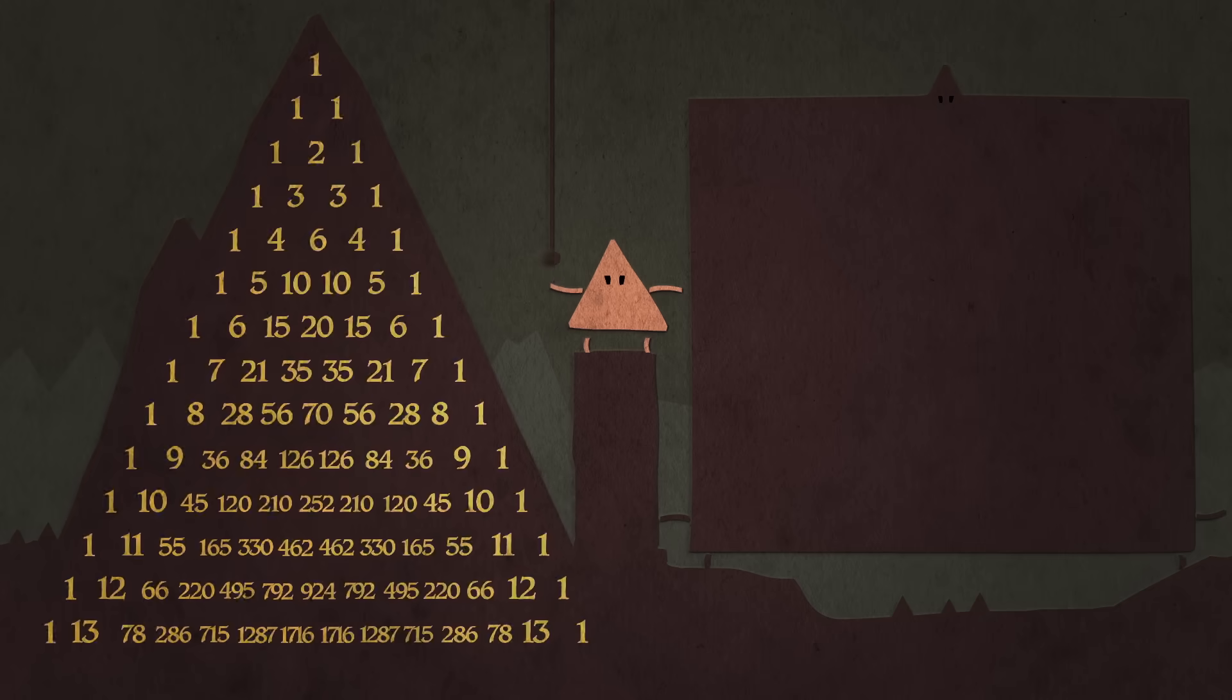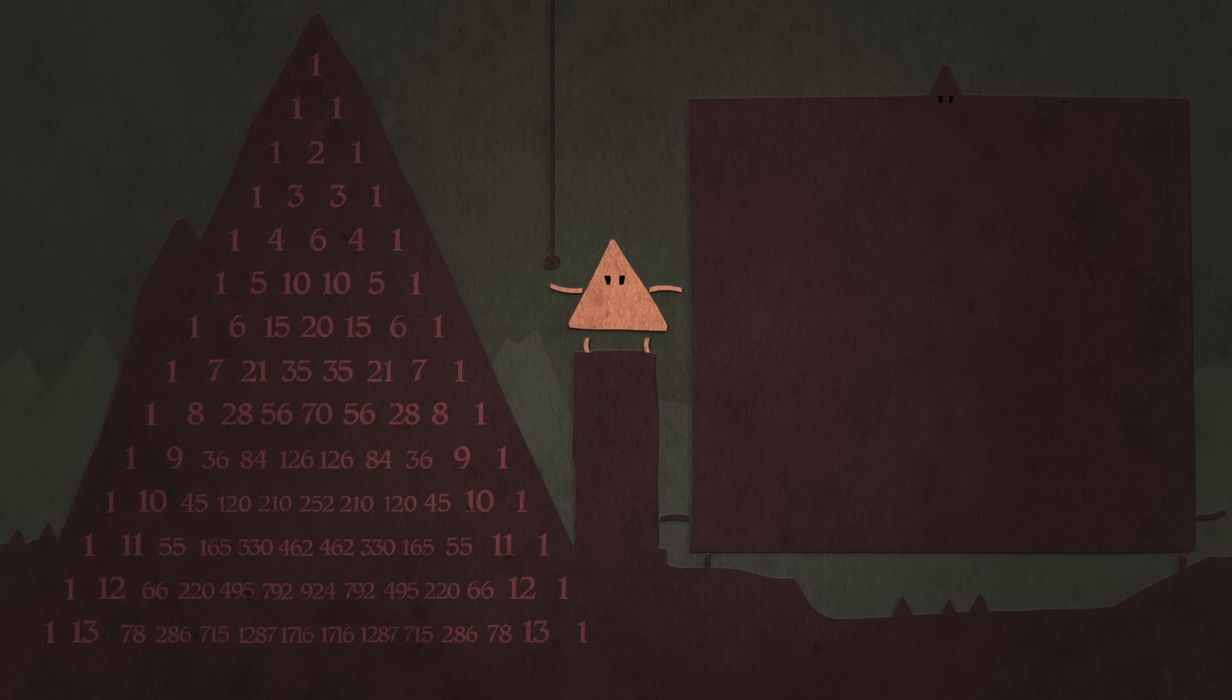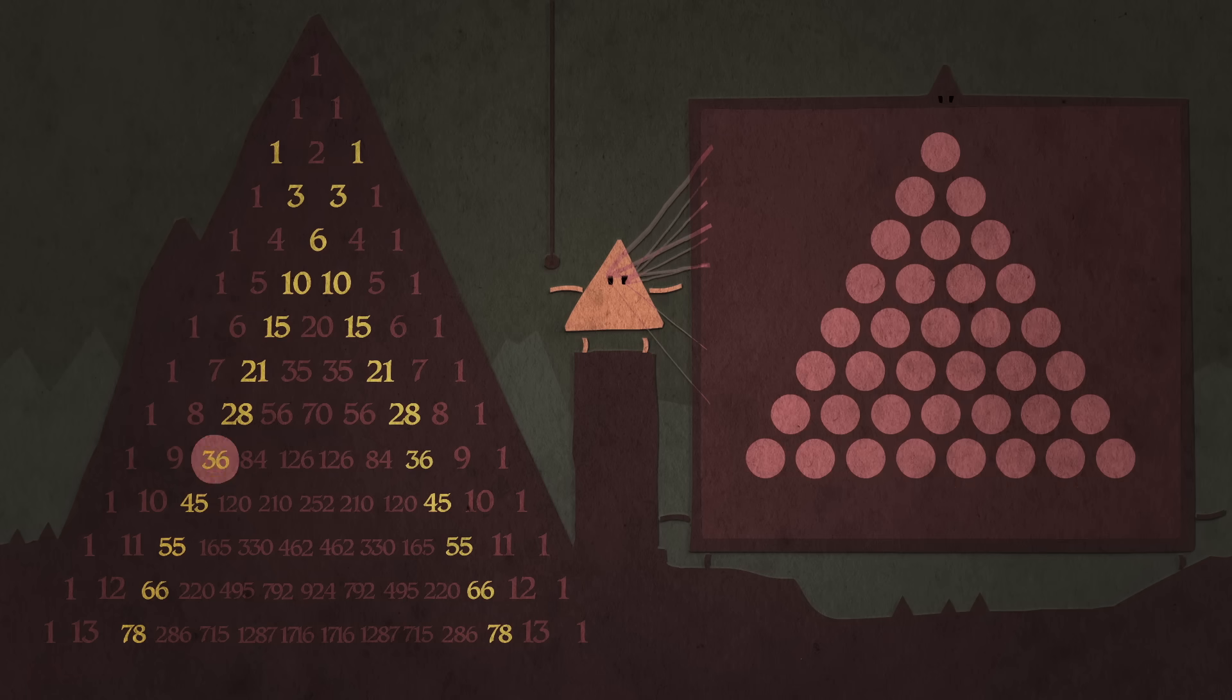There are also geometric applications. Look at the diagonals. The first two aren't very interesting—all ones, and then the positive integers, also known as natural numbers. But the numbers in the next diagonal are called the triangular numbers, because if you take that many dots, you can stack them into equilateral triangles.